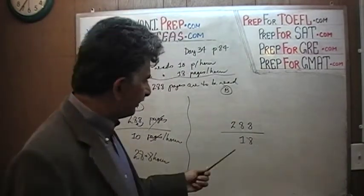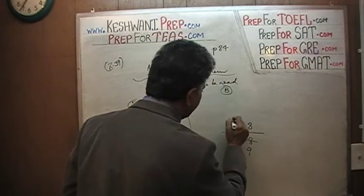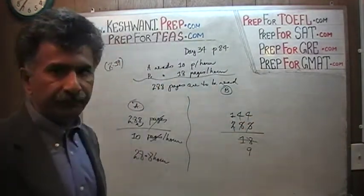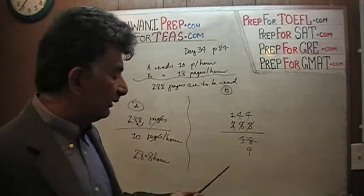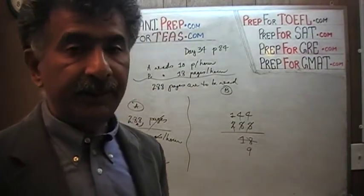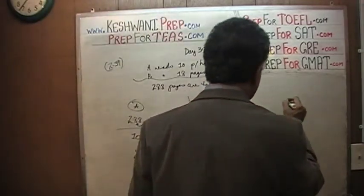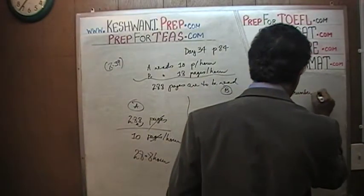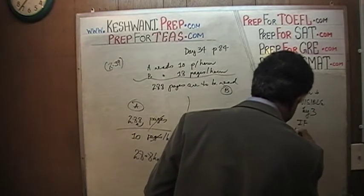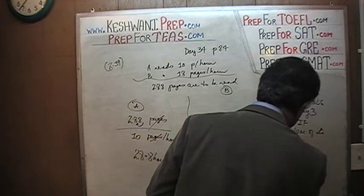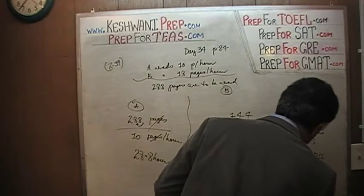The first thing we notice is that they're both even numbers. So let's divide top and bottom by 2: 288 over 18 becomes 144 over 9. We can no longer divide by 2 since 9 is odd, so we ask if we can divide by 3. A number is divisible by 3 if the sum of its digits is divisible by 3.